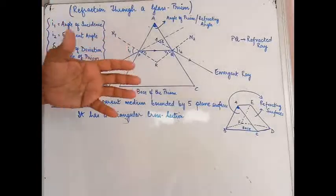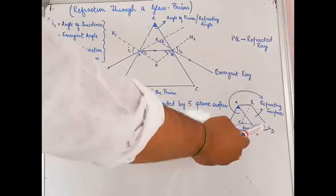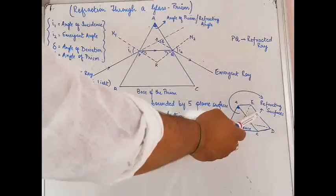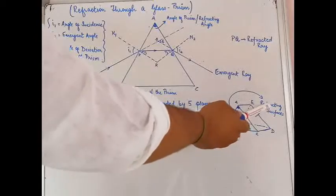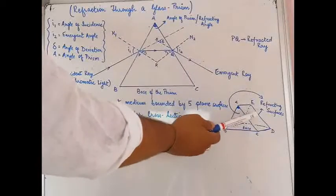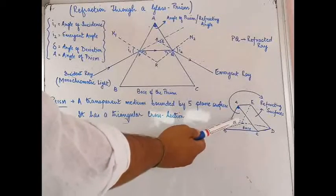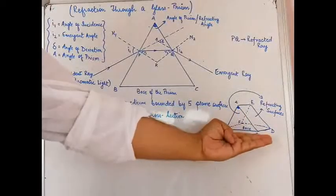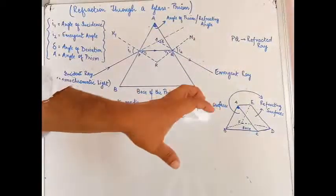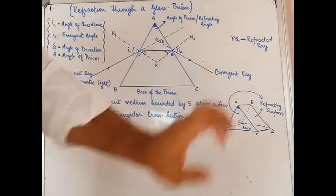Looking at the diagram, there is a base — that is one surface. Then you have one sloping surface on one side and the other sloping surface on the opposite side. These two sloping surfaces are known as refracting surfaces because generally light enters from these sides. So that gives us two refracting surfaces plus one base, making three. Then one triangular face in the front and one at the back. So total we have five plane surfaces, and these five plane surfaces are touching each other to form a three-dimensional prism.